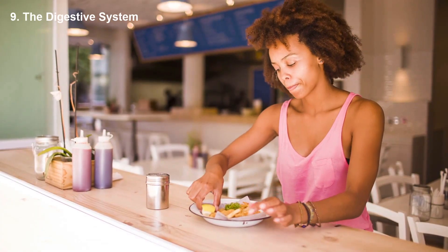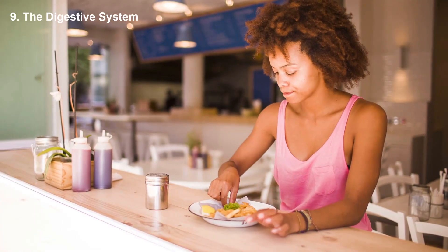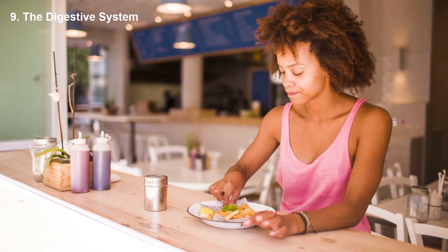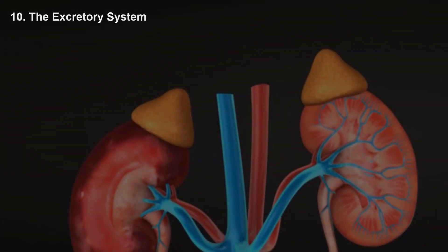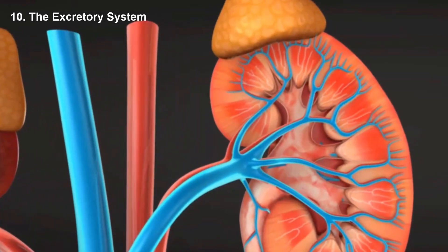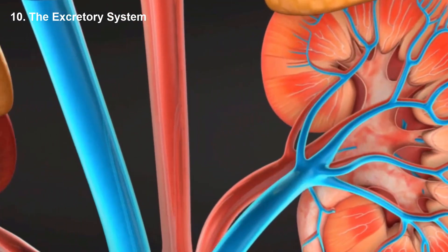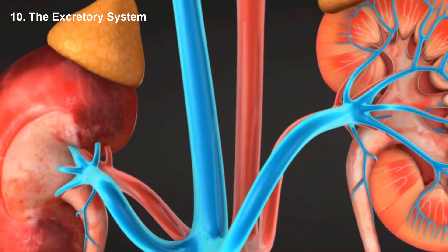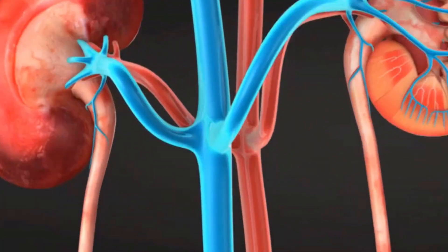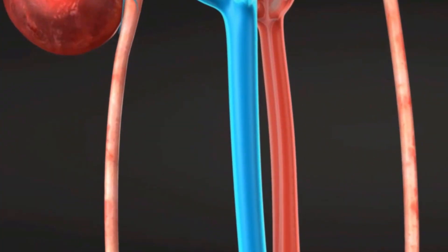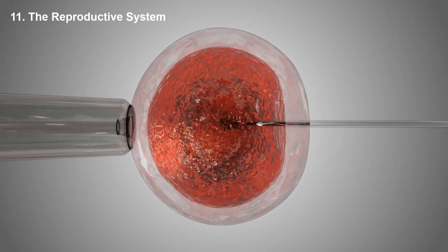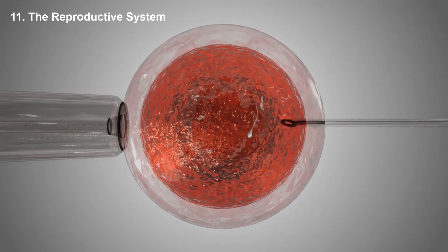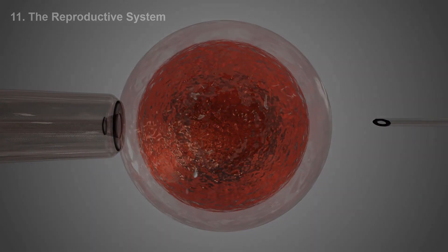The digestive system breaks down food and nutrients for absorption and use. The excretory or urinary system is responsible for maintaining pH and balance of body fluids as well as excretion of waste. The reproductive system gives the organism the ability to produce offspring.